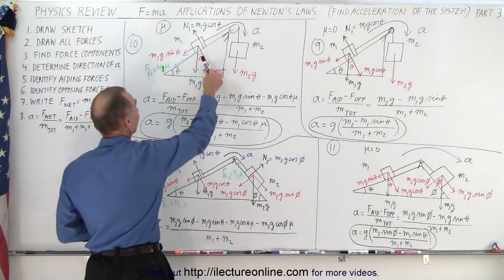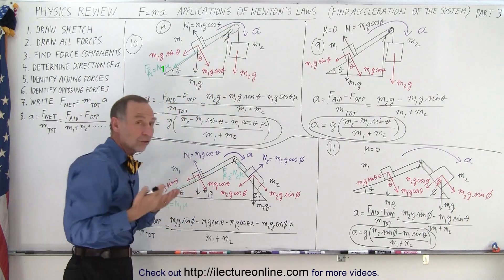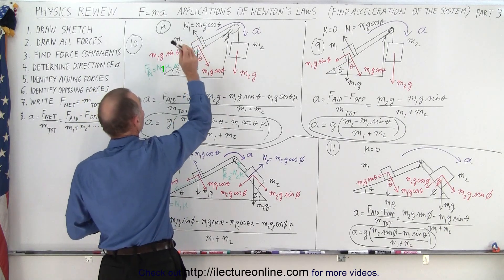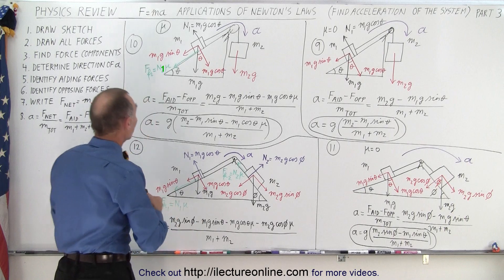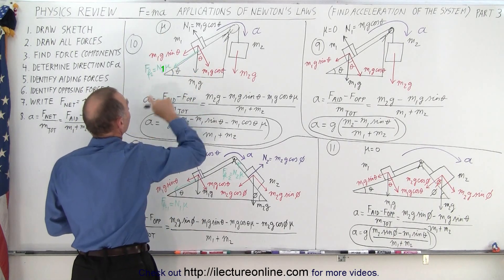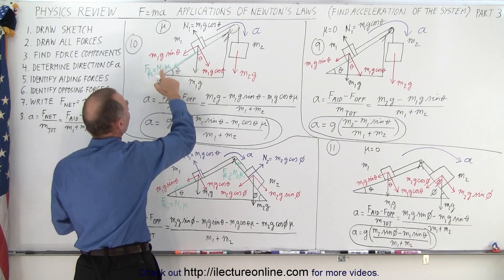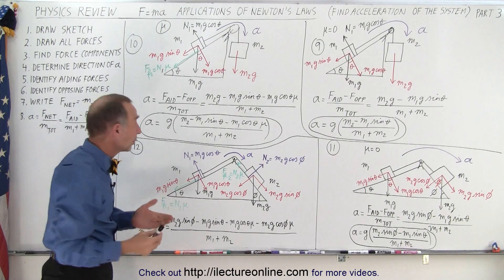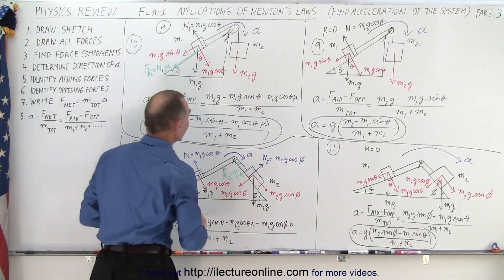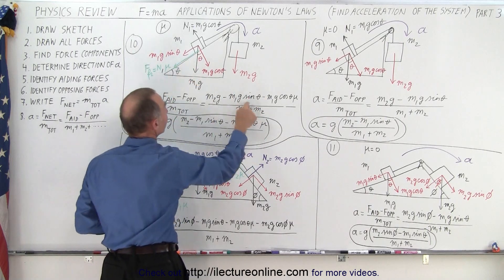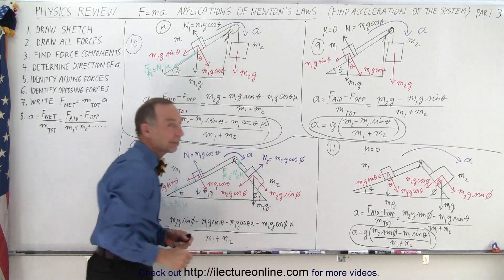Now if there's friction, the component of weight pushing the block against the incline produces a normal force — for every action there's an equal and opposite reaction. The normal force equals M1g cos theta. Since mu is not zero, the friction force is the normal force N1 times mu, where N1 equals M1g cos theta. So the aiding force is M2g, and the two opposing forces are M1g sin theta and M1g cos theta times mu. The difference between those divided by total mass gives the acceleration.